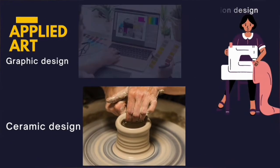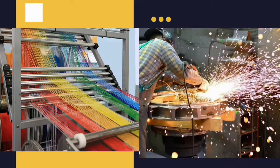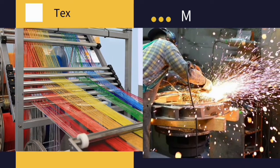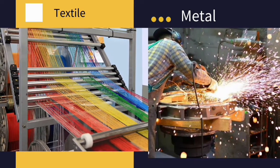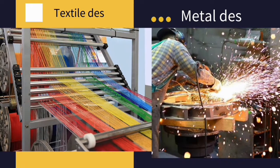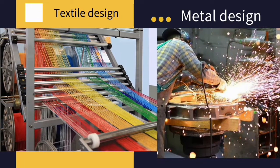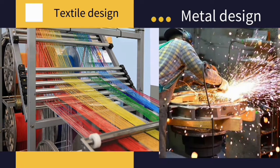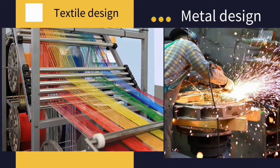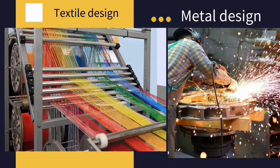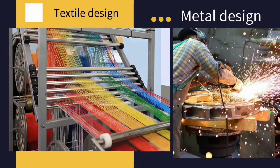Fashion design involves the usage of a sewing machine. We also have textile design, which involves the usage of a weaving machine. And lastly, we have metal design, which makes use of a welding machine in carrying out its production processes.